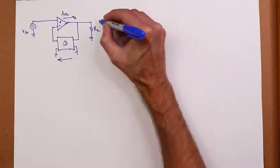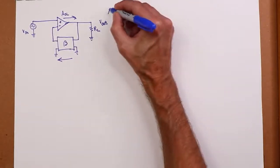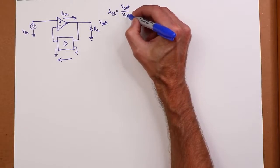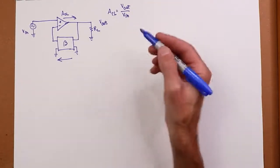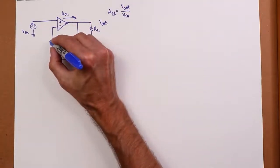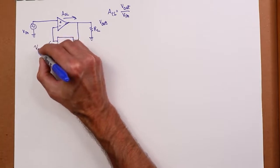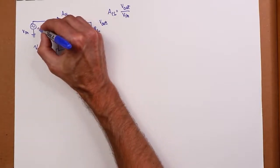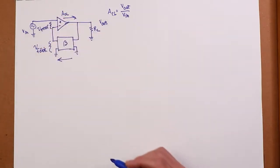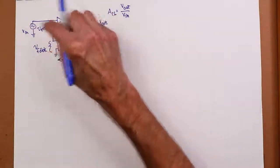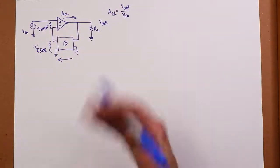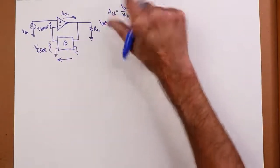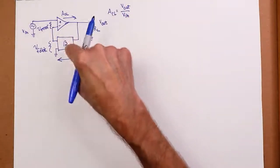Now what I want to describe is the closed loop gain ACL. And that's defined as V out over V in. So along the way, I need to define a couple other voltages. So the voltage that we see coming out of the feedback network, we will just call V feedback. Then for historical reasons, the voltage between the plus and minus is called V error. This comes from control system theory. V error meaning it's the difference between the input and the feedback.